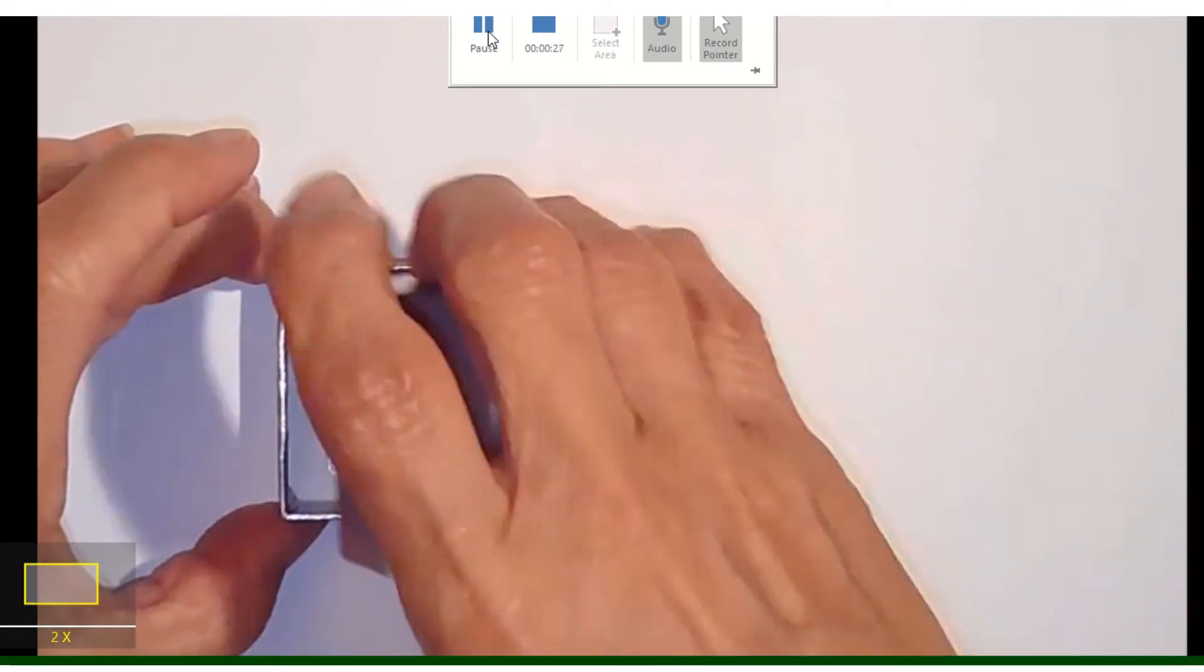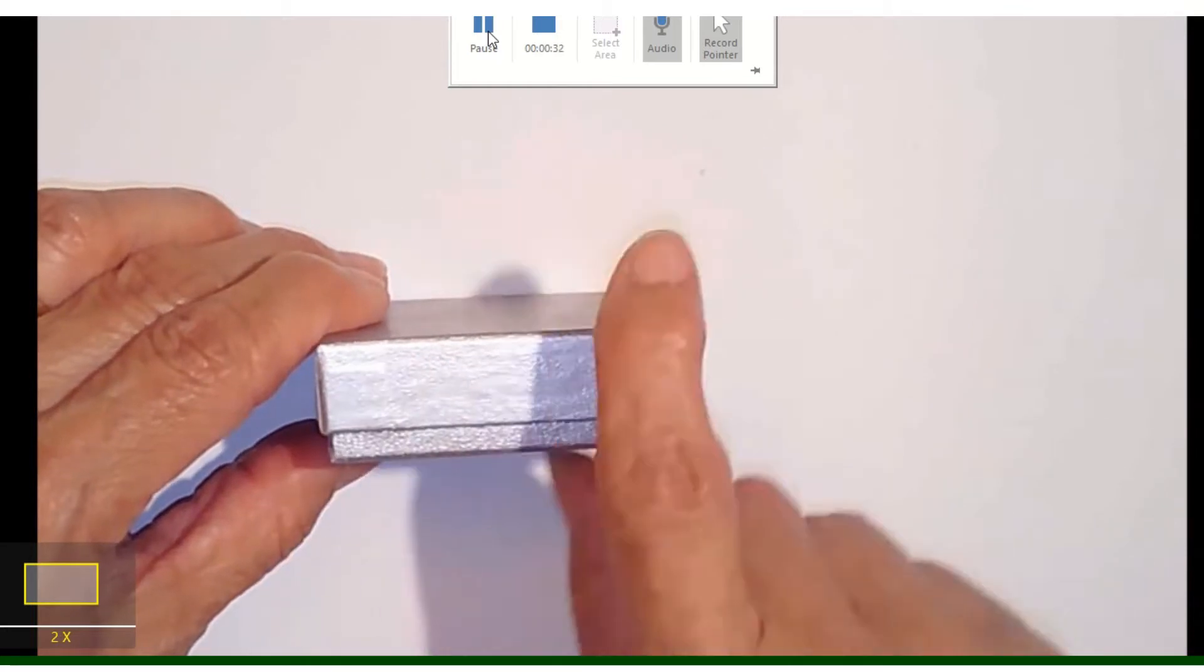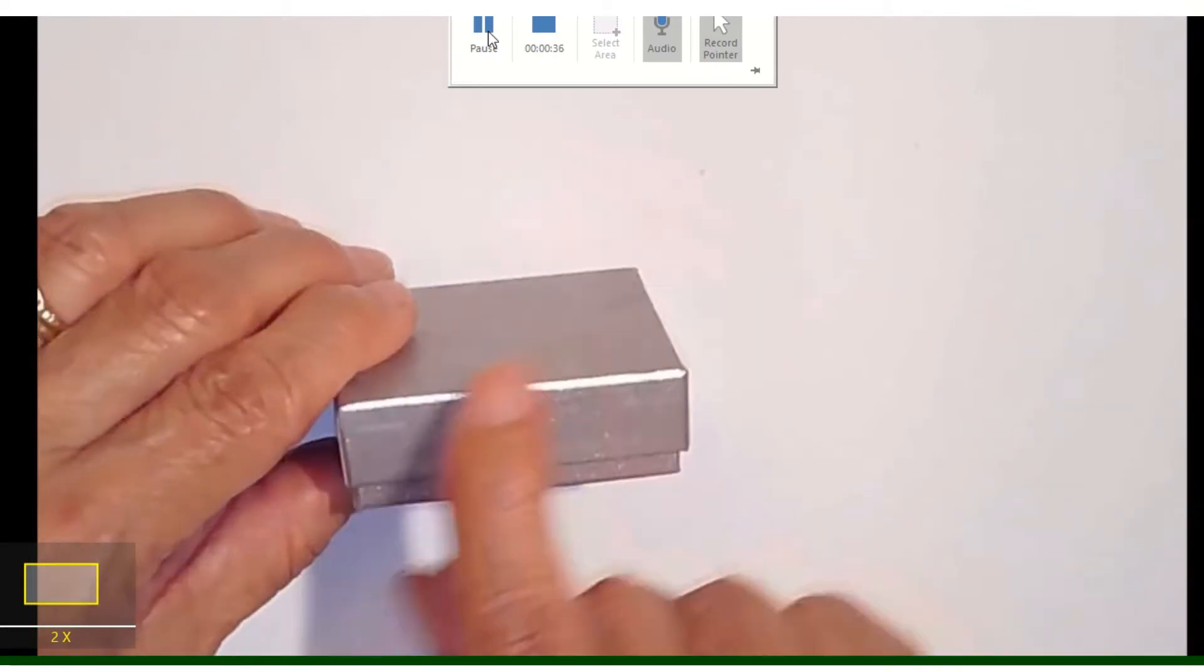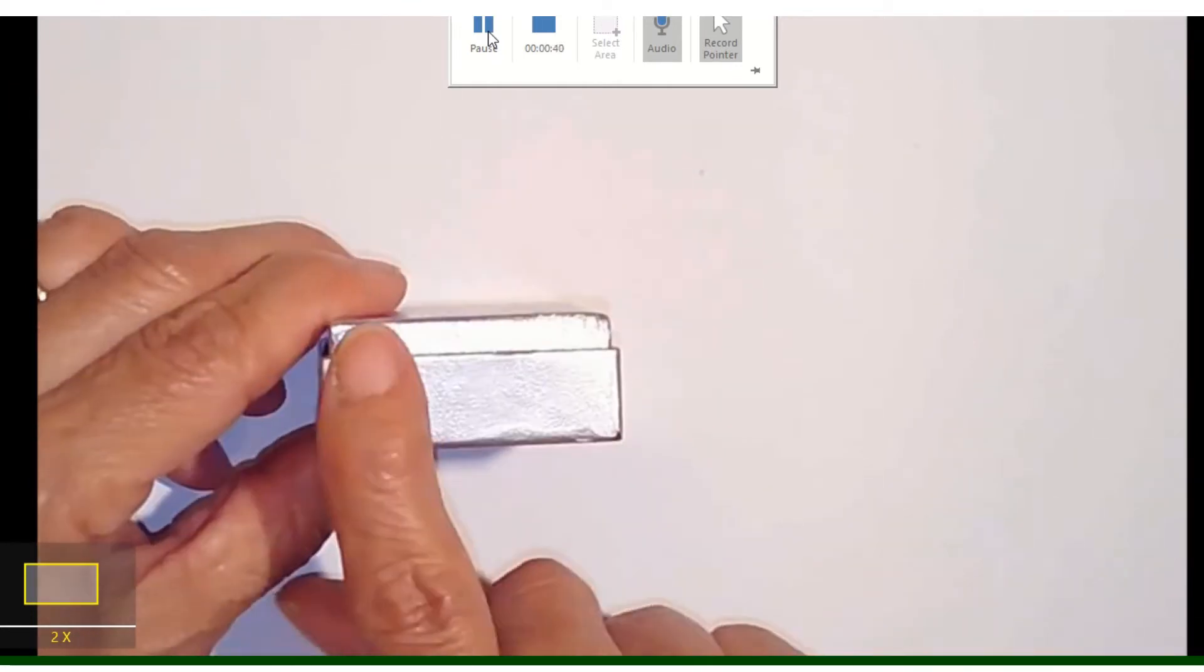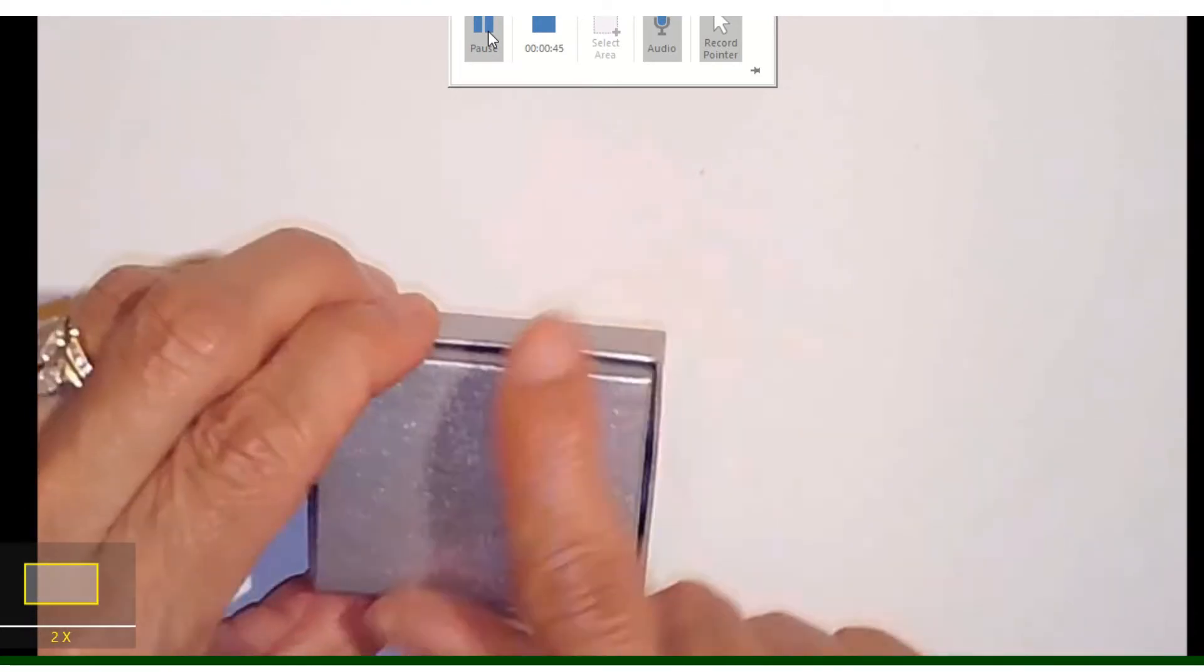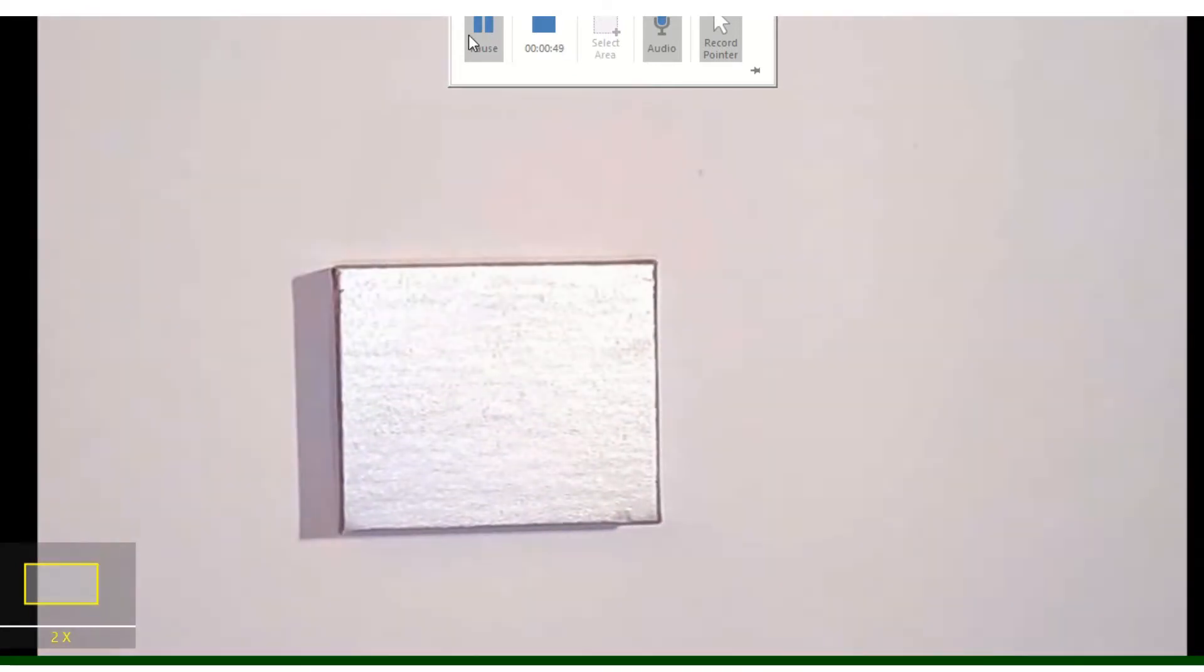If you recall from our previous lessons, each side has another side to it which is called an opposite or a face. This face has this matching face. This face has this matching face, and this is your top. This is your bottom. That would be considered your three-dimensional figure.